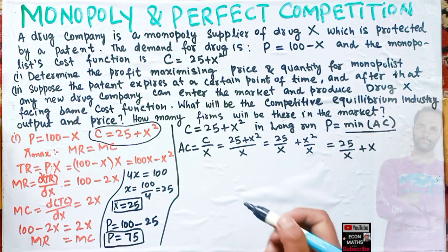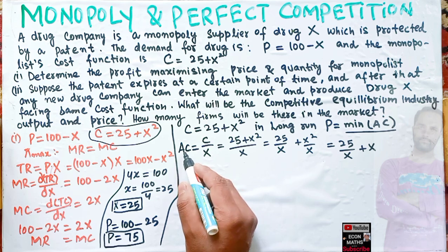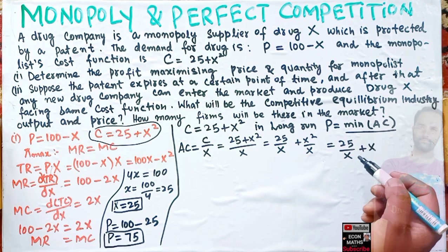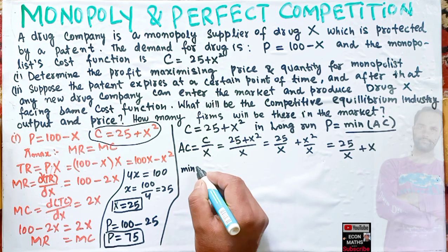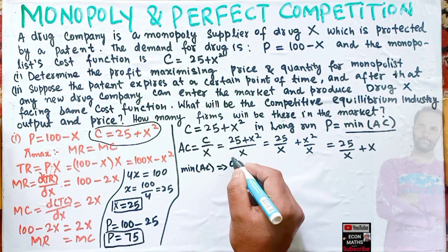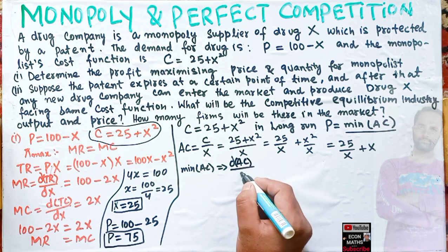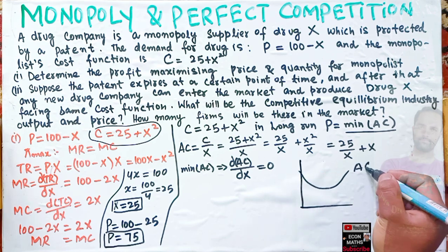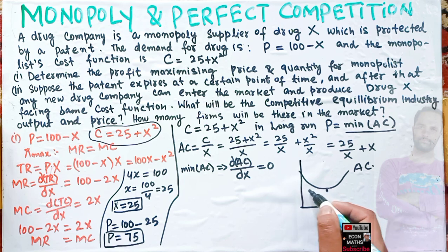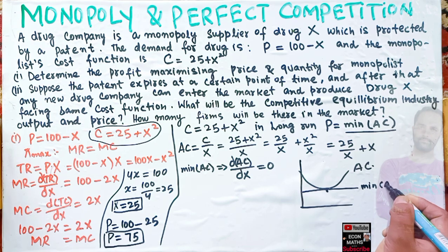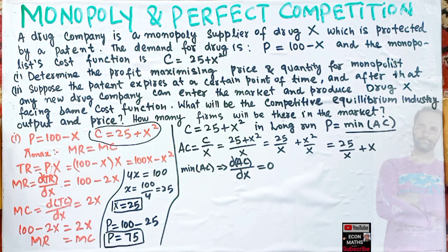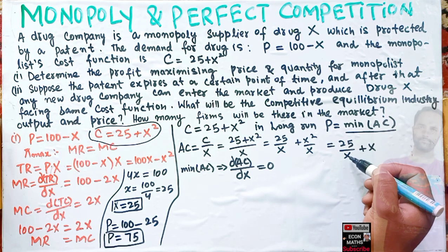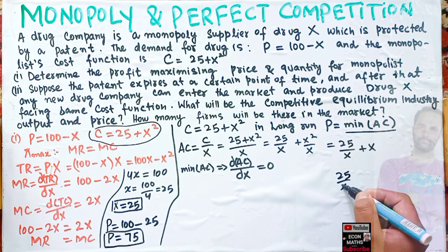Minimum of average cost means we take the derivative of AC with respect to output and set it equal to zero — the slope should be zero at the minimum point. So we need to differentiate AC = 25/x + x and set d(AC)/dx = 0.